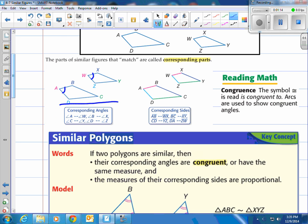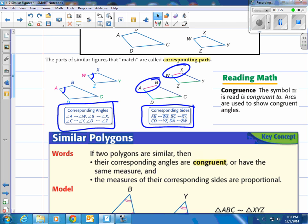Same with sides. Side AB corresponds with side WX. They've kind of colorized all those. You can see them in the chart here. Those are all corresponding sides. They match up the sides.